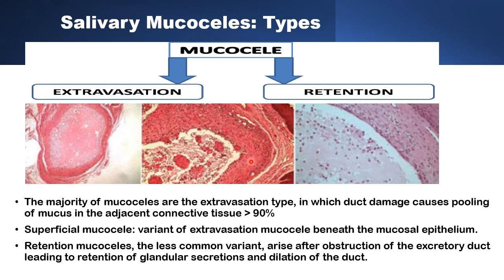The extravasation type is by far the most common, accounting for about 90% of salivary mucocele cases. If they are close enough to the mucous membrane of the oral cavity, they are termed superficial mucoceles. The retention mucocele, the other type, is formed within the minor salivary gland due to blockage of the duct. The bulk of retained mucus remains within the minor salivary gland, and the cyst is lined by epithelium. This type is far less common than the extravasation type.